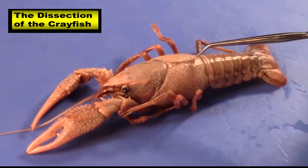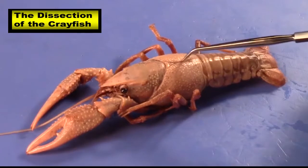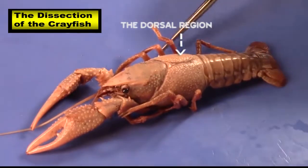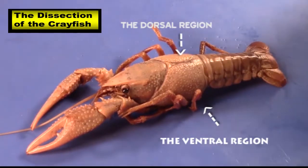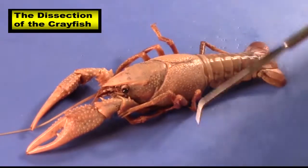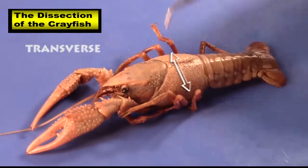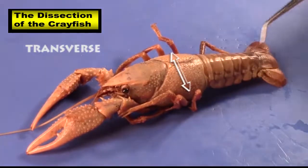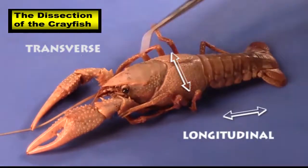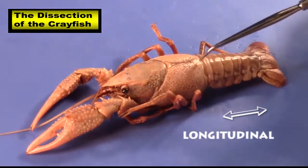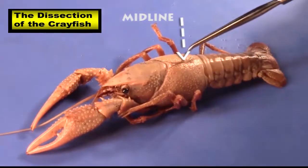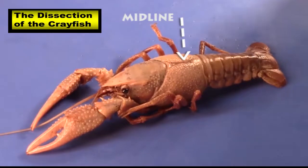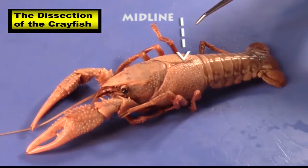We also talk about the back, which is known as the dorsal region. And when we flip them over on his belly, that's the ventral region. If we were to cut this direction, we would say that's a transverse cut. And when we cut this direction, it's a longitudinal cut. If we cut right along the middle portion, that's right along the midline. So these are just some good dissection directions to keep in mind.